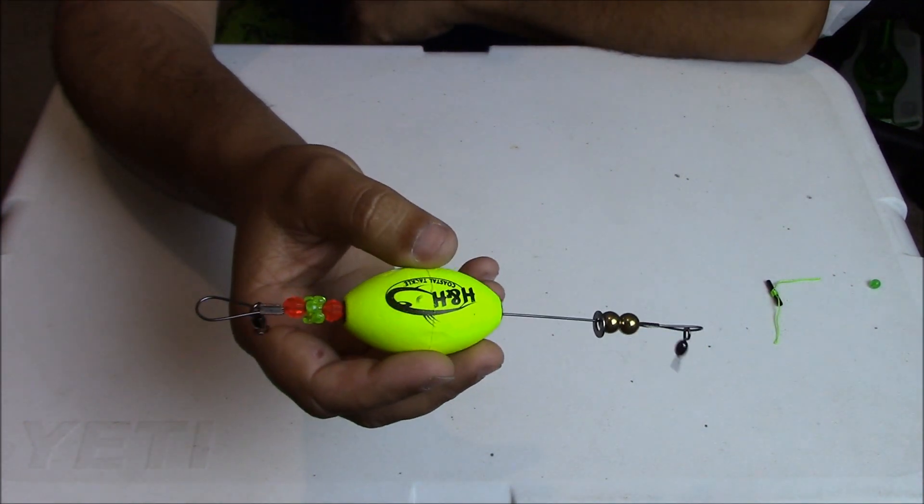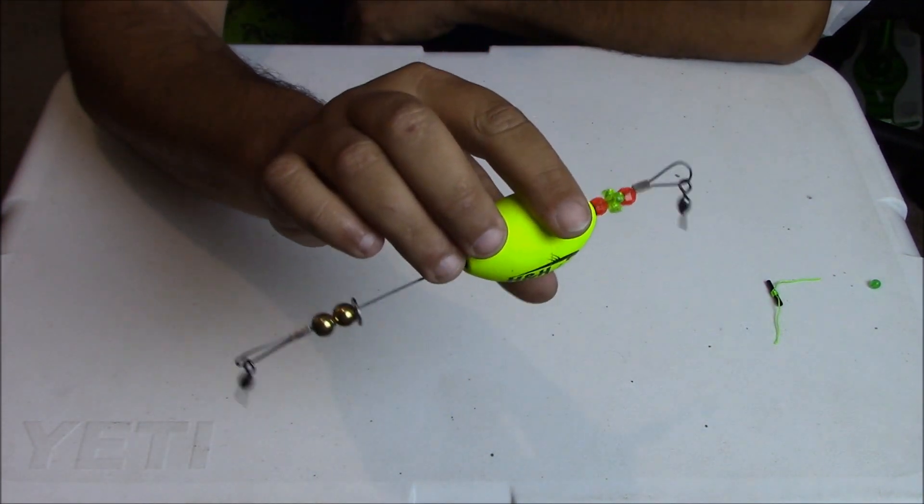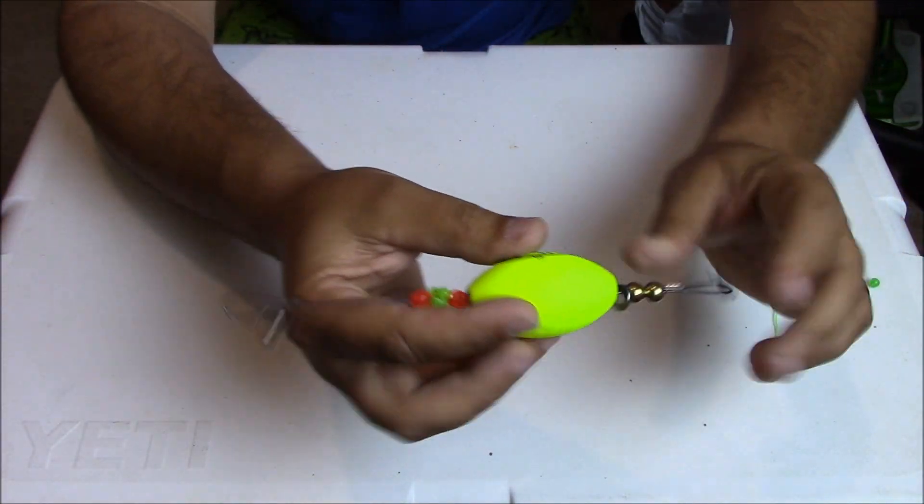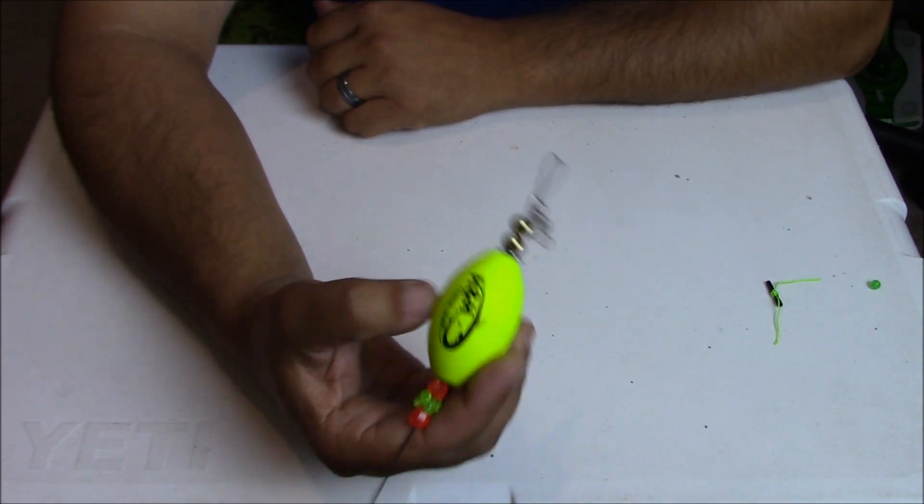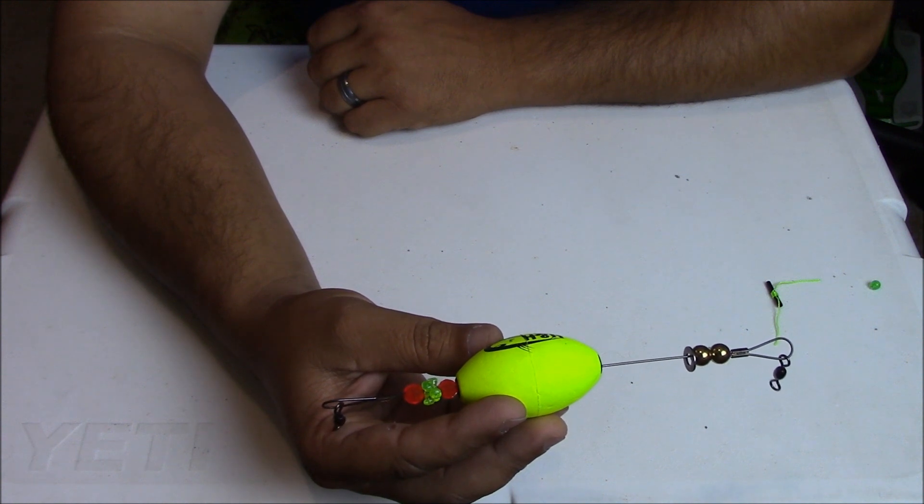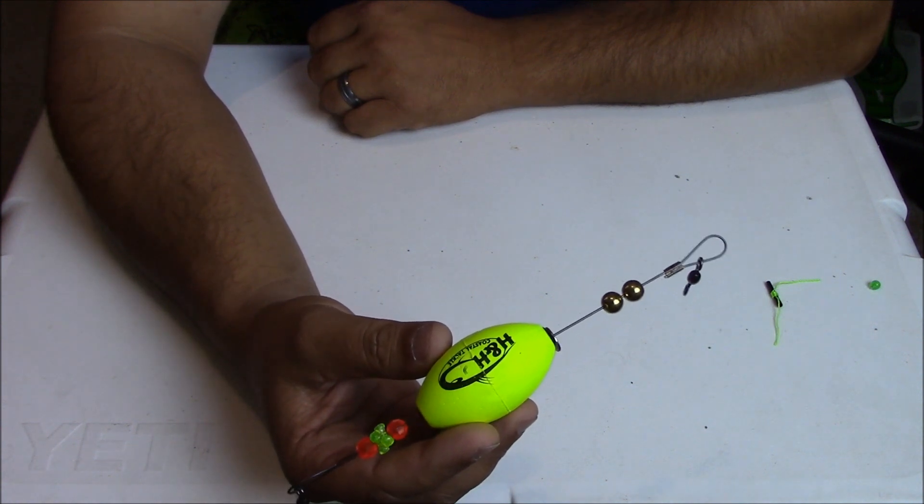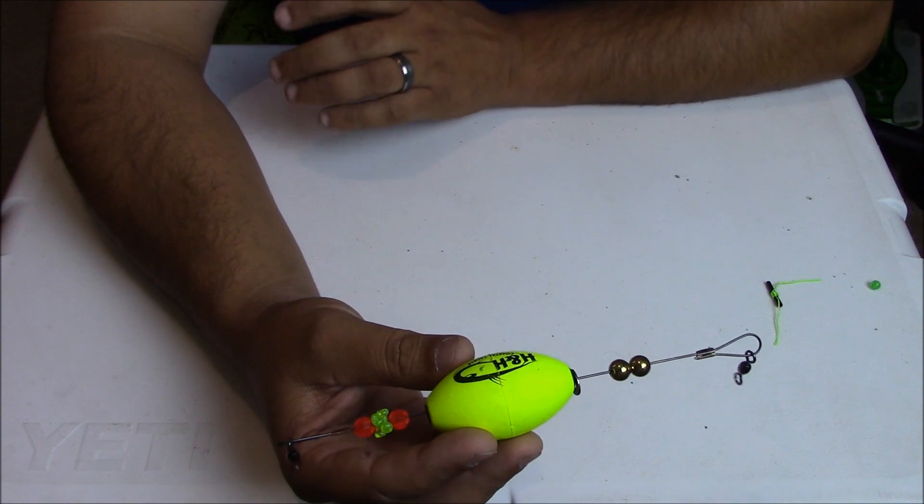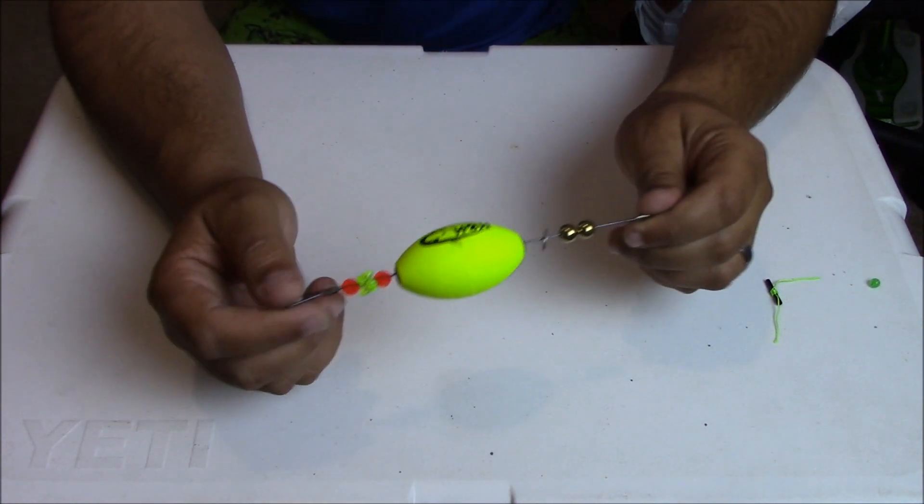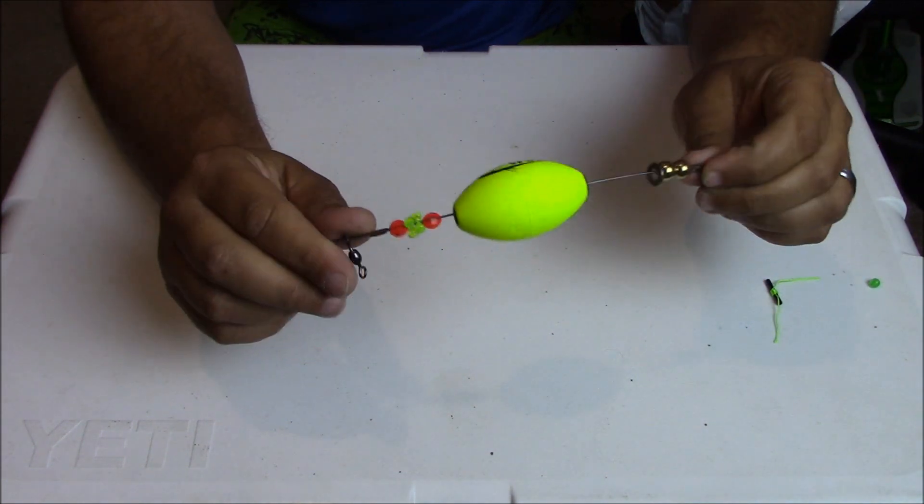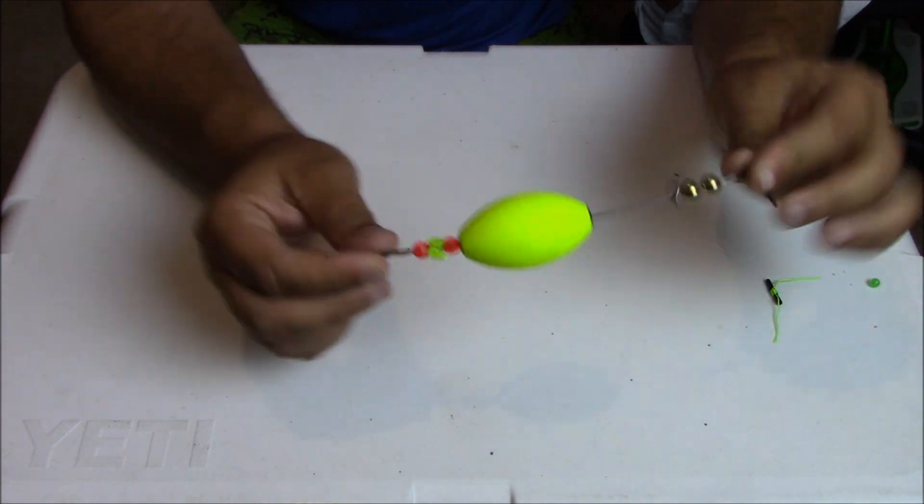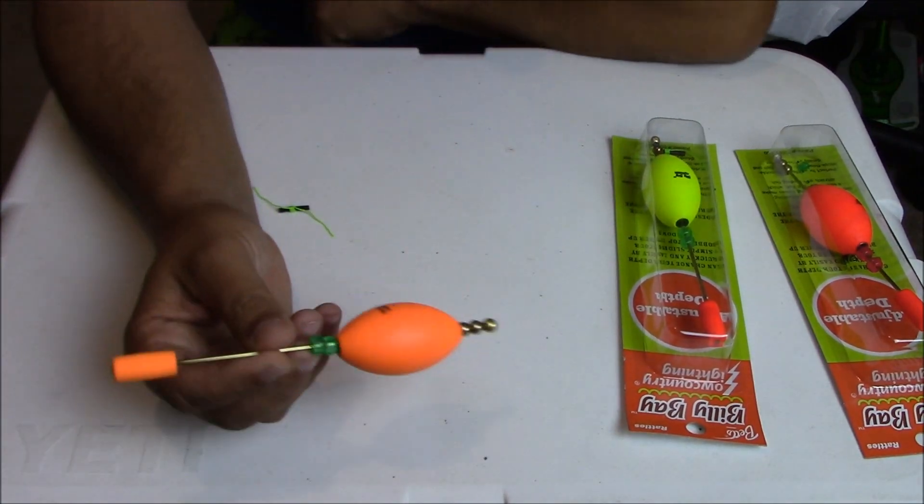These are more expensive, normally two or three dollars more, but it'll last longer. You don't have to worry about the wire kinking up. This particular brand here is the H&H Coastal Tackle. I bought these at Academy. They're like five or six bucks. Bomber makes one too that's really good. There's a couple of different companies that make the titanium ones, and they just hold up better.